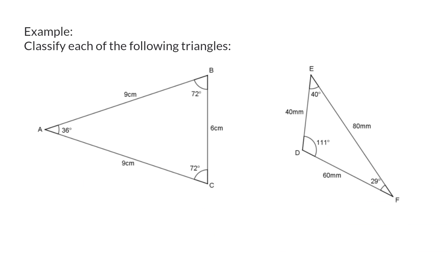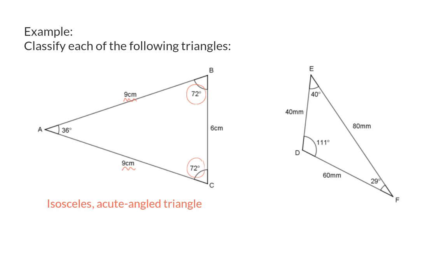Classify each of the following triangles. In triangle ABC you will notice that two of the three side lengths are the same, so we can call this an isosceles triangle. If we now have a look at the angle sizes, you will see that the biggest angle in this triangle is smaller than 90 degrees, so that is an acute angle. Triangle ABC will therefore be an isosceles acute angled triangle.